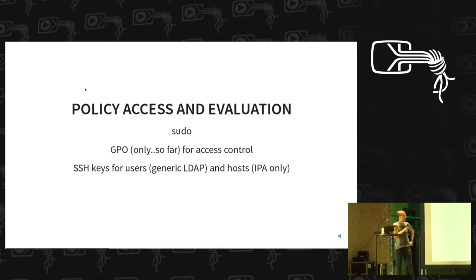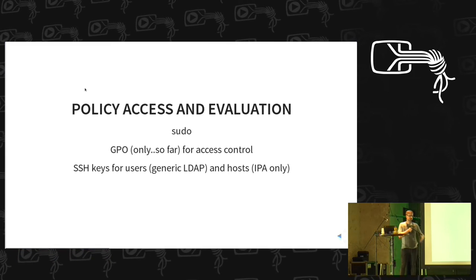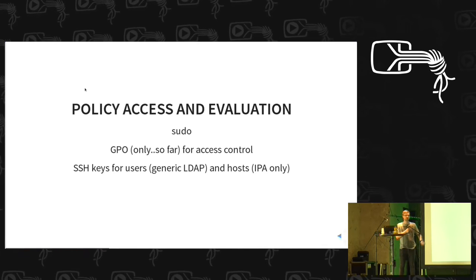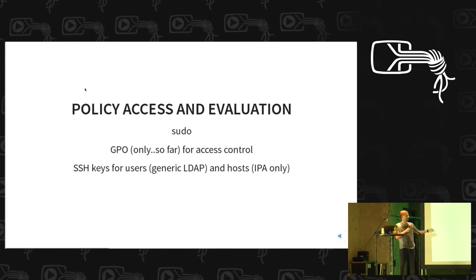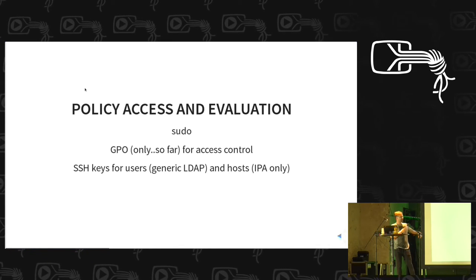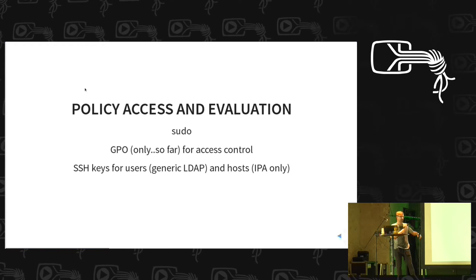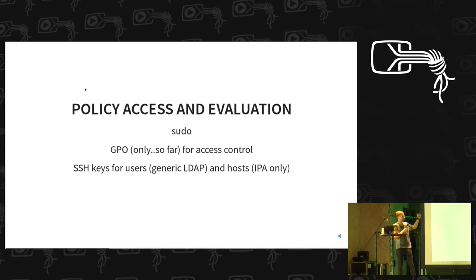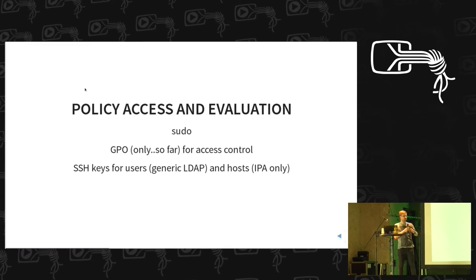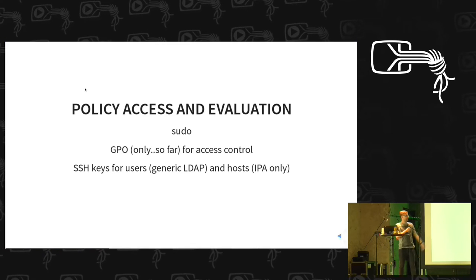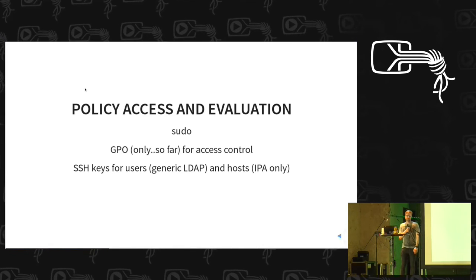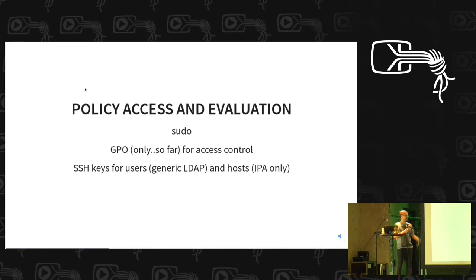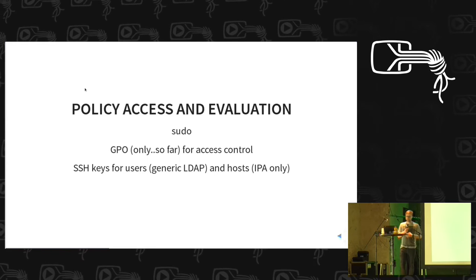We also allow fetching SSH keys for users stored in any LDAP service — it's a base64-encoded blob in the LDAP directory that SSSD fetches and converts. OpenSSH has a pluggable interface that allows calling any third-party binary, so we call from OpenSSH into SSSD which calls into LDAP and delivers the SSH keys. With FreeIPA, since IPA also manages hosts, we can deliver SSH keys for hosts centrally.